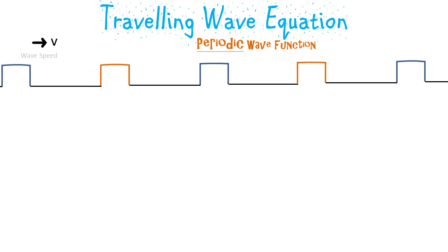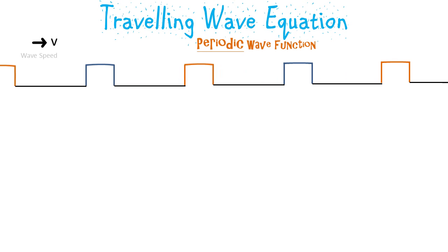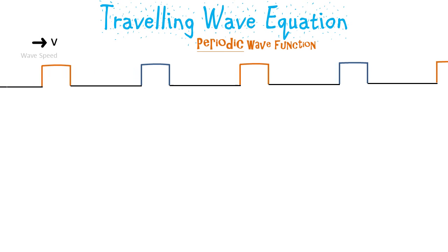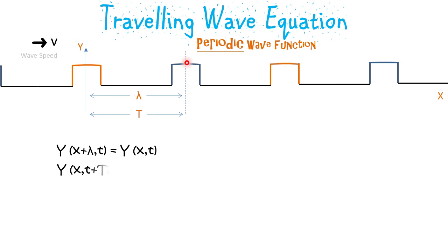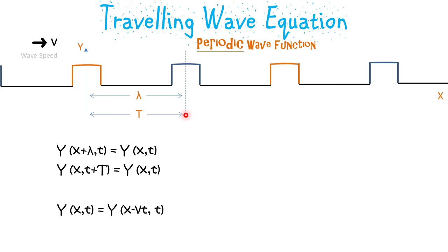We have a periodic wave here instead of a pulse, and this has a wavelength lambda and time period T. The value of y at x equal to lambda is the same as the value of y at x equal to zero. Similarly, the value of y after time period T equals zero, and the condition of a traveling wave equation still applies here.